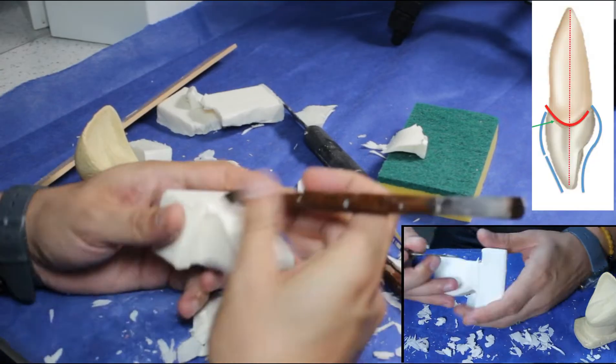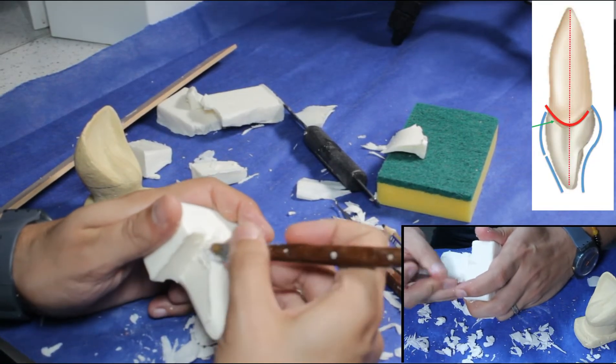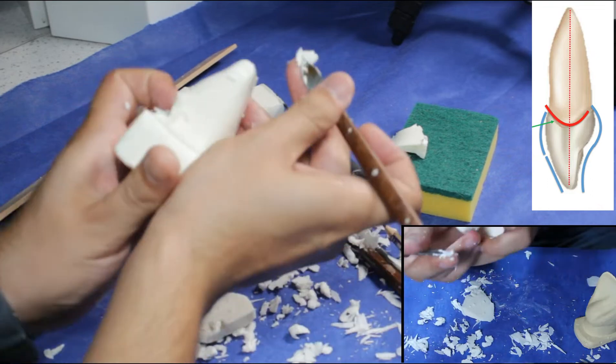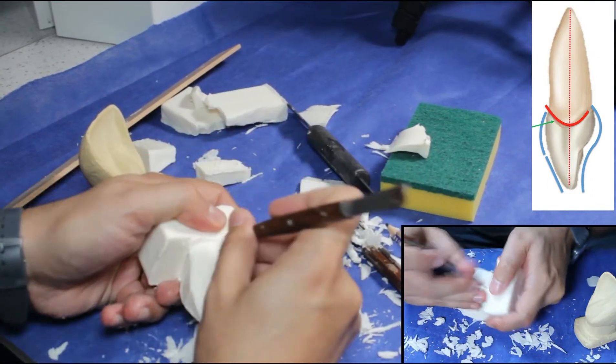Then we keep carving to make the surfaces smoother. Below the cervical one-third, we continue carving to make it narrower. Second dimension is almost done.